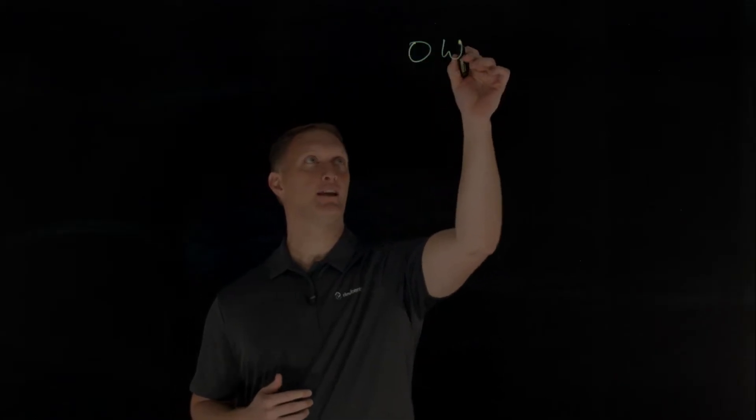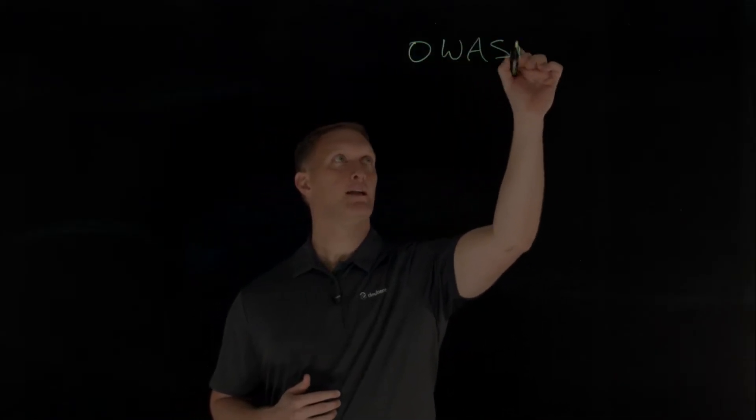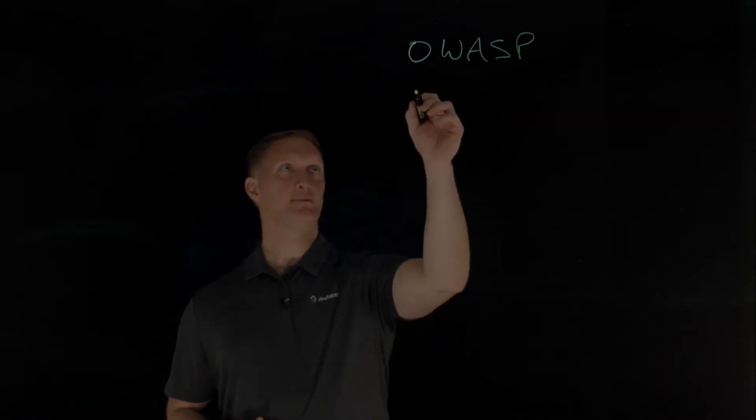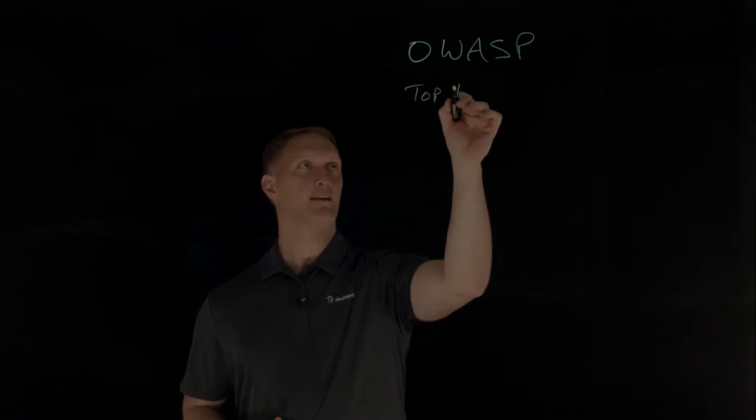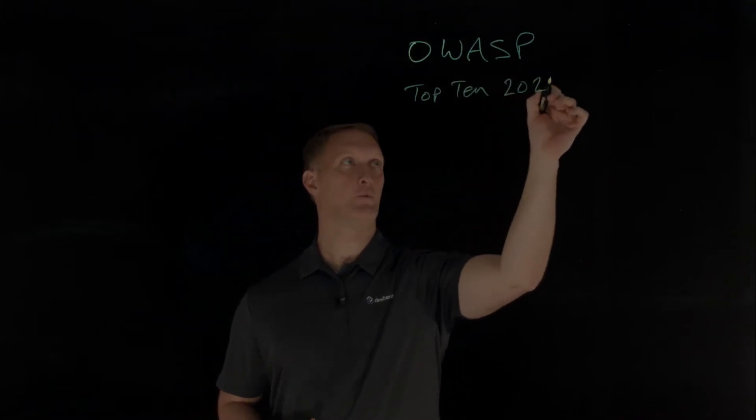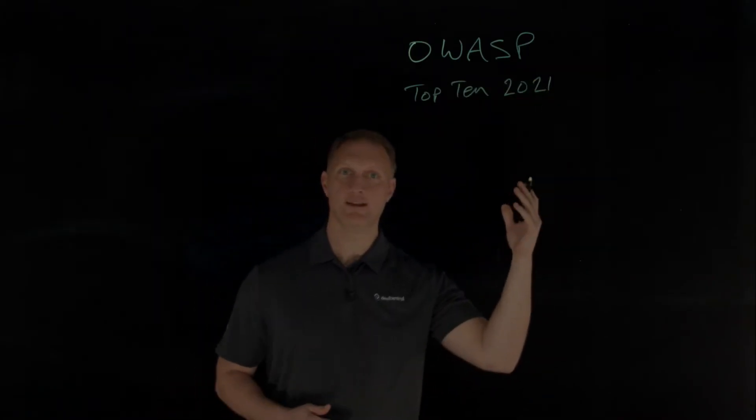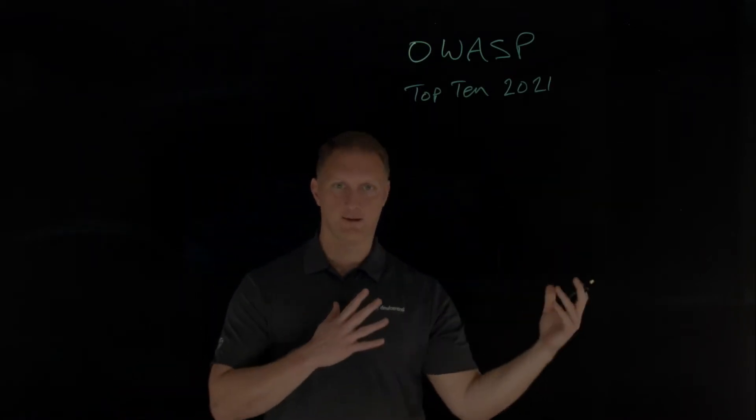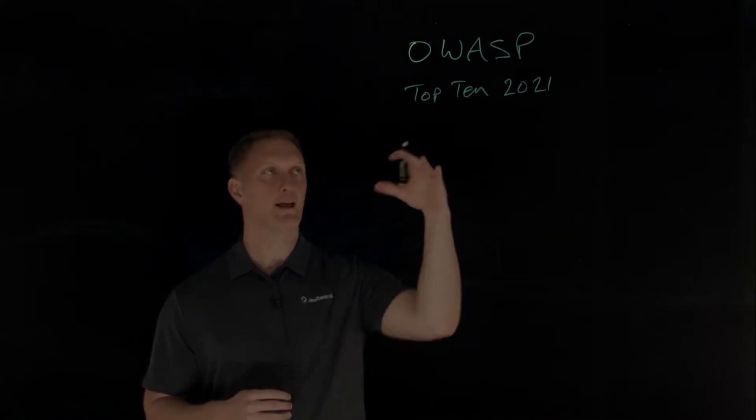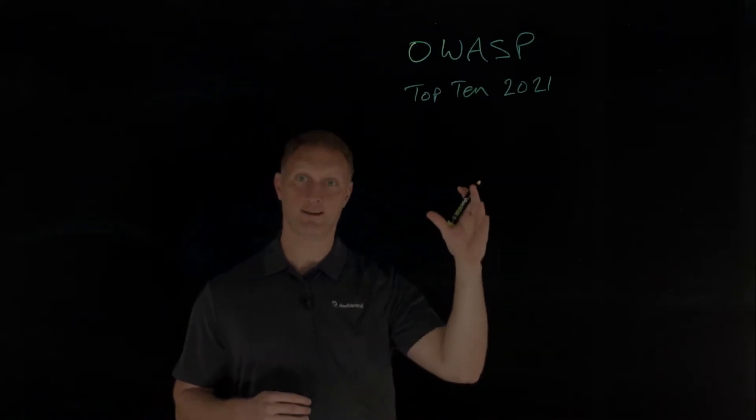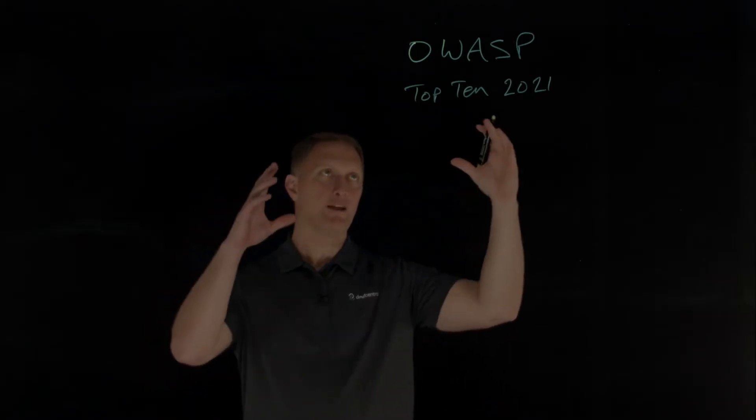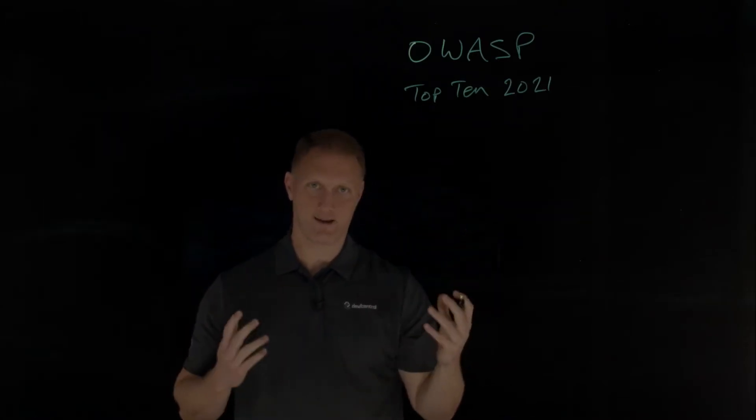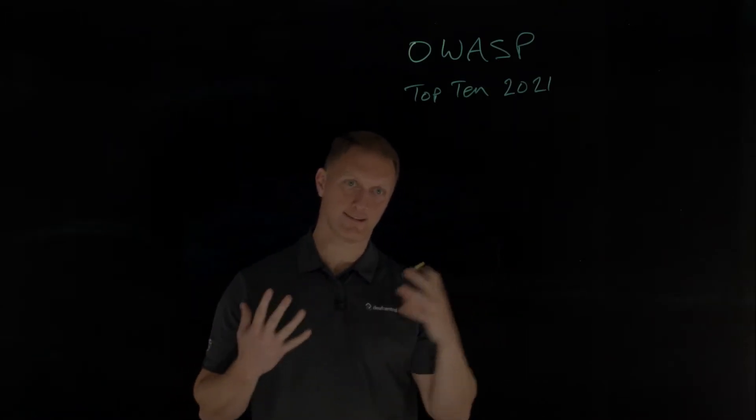The OWASP is the Open Web Application Security Project, and they just released their top 10 list of security risks for 2021. This list comes out about every three to four years. The last list was released in 2017, and the OWASP Top 10 is an awareness document.